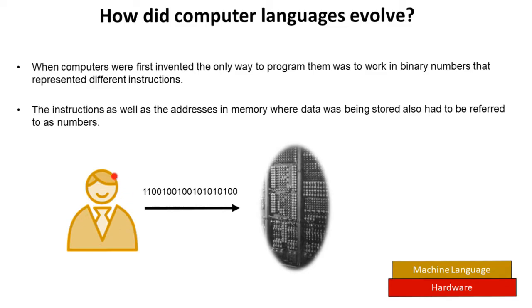The actual programmer would have to program the exact sequence of ones and zeros directly into the computer. This sequence of ones and zeros is called machine language. And it accesses the hardware directly to execute the instructions the programs provided.